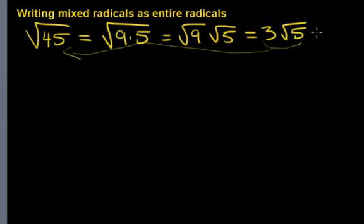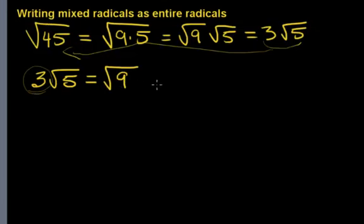Let's have a look at this question right here and see how we can end up going backwards. We've got 3 root 5, and what did we square root to end up with 3? That's what you have to think about. Well, the square root of 9 is 3 and the square root of 5 is still just the square root of 5.